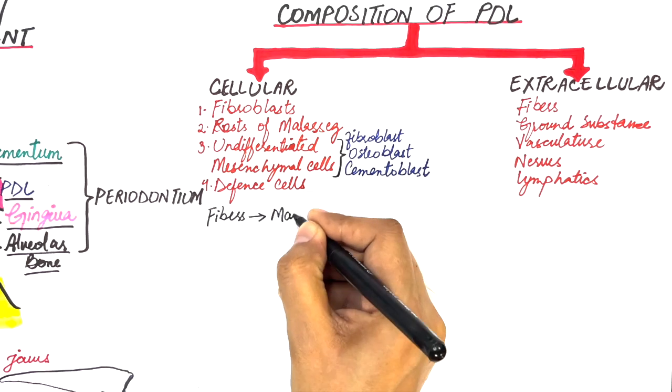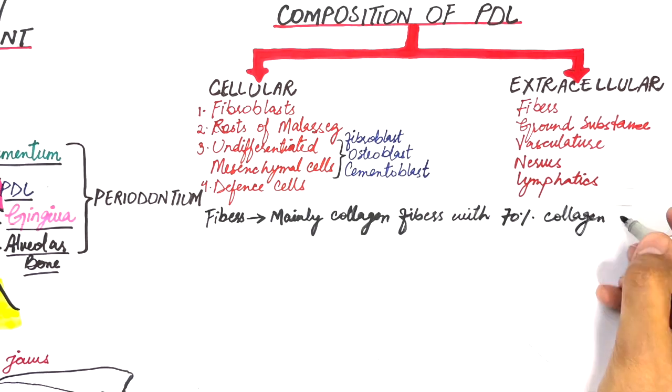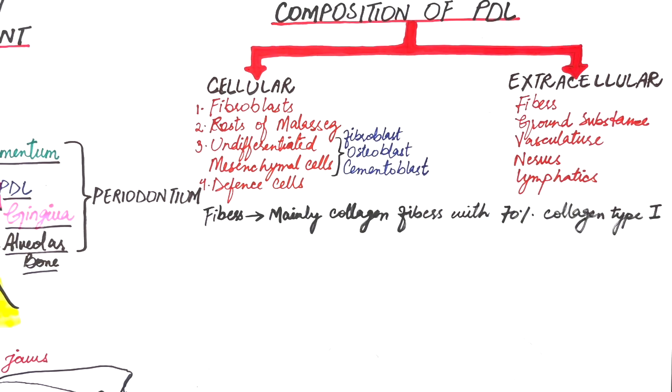The fibers are mainly collagen fibers. About 70% of collagen fibers are mainly of type 1. Other types of collagen like collagen type 3 and type 12 may also be present.